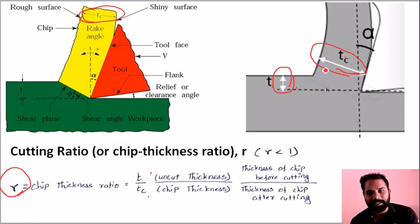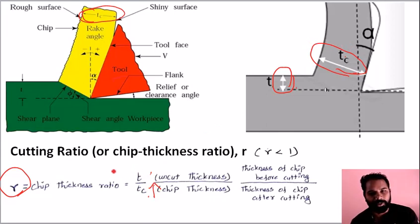Due to thermal expansion, material expands, so Tc remains the same while T is less. Therefore, the chip thickness ratio R remains the same.